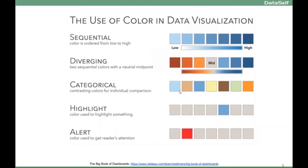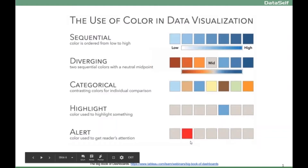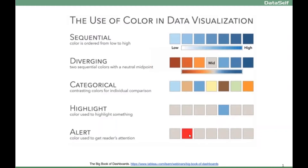If you're trying to highlight something, a very good approach is to use a single color to highlight. Typically, you don't want to make it big — you want to make it subtle to highlight, unless it's an alert or something really critical. Then you should use a very bright color such as red to show the attention.